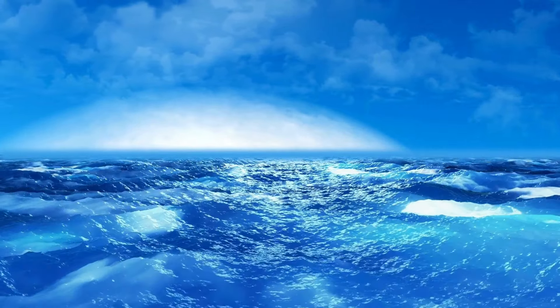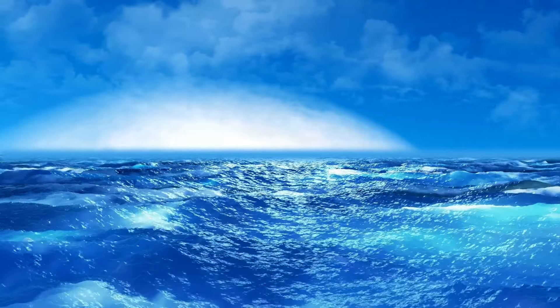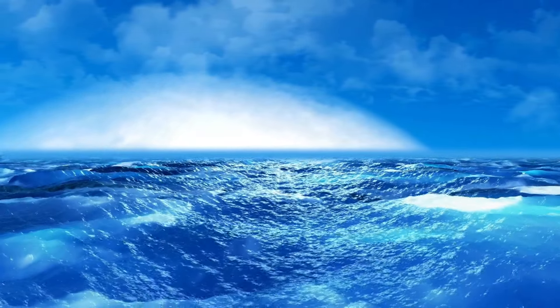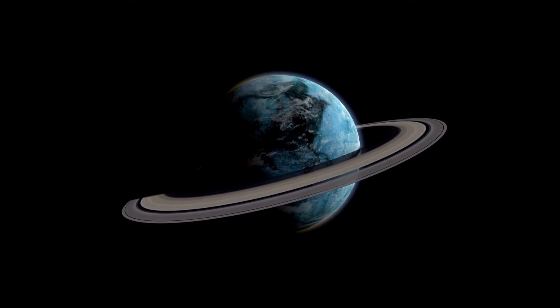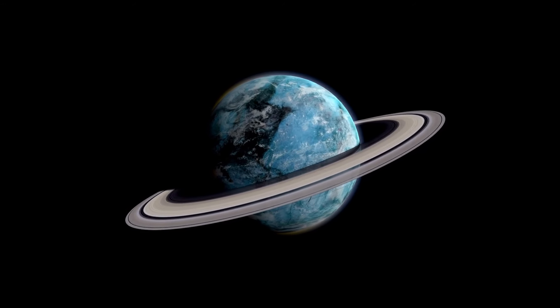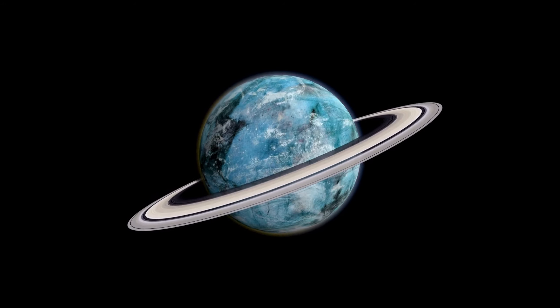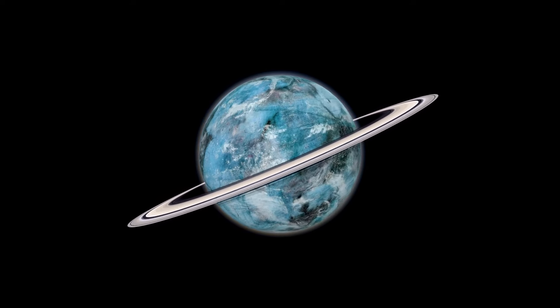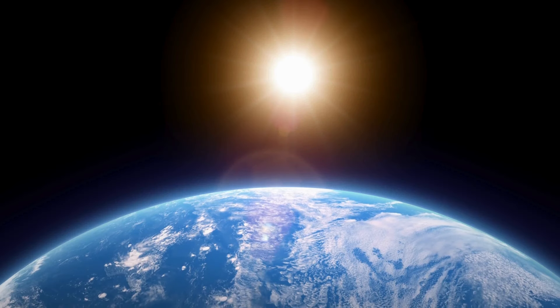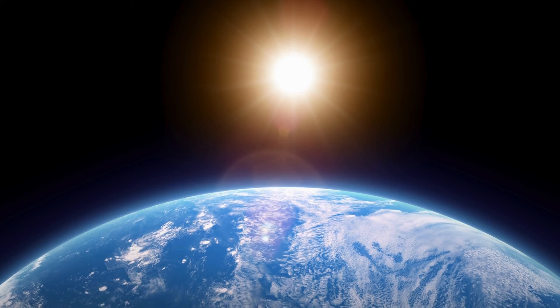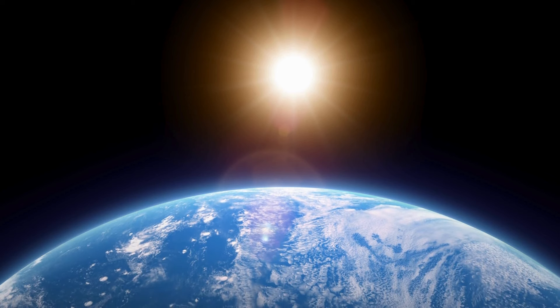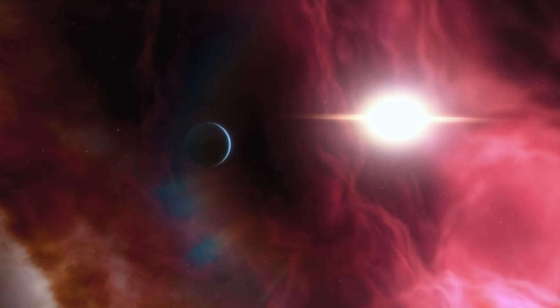Some exoplanets even wander aimlessly, untethered to any star, like rebel explorers in space. Among them all, Proxima Centauri b stands out as a truly remarkable planet, with a year that lasts only 112 Earth days. Almost certainly, one side of the planet is constantly bathed in light, while the opposite side remains in endless darkness.